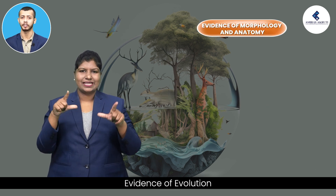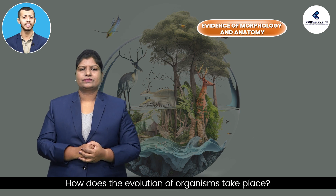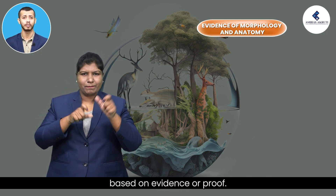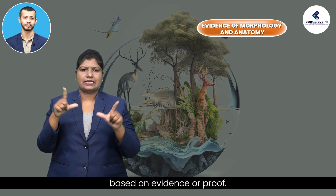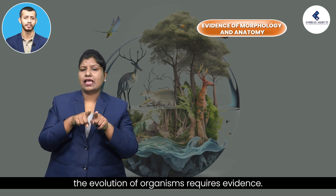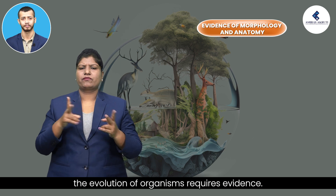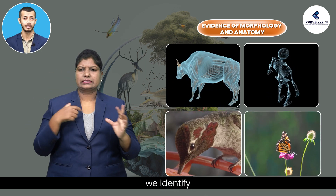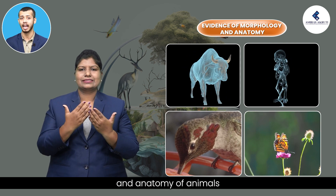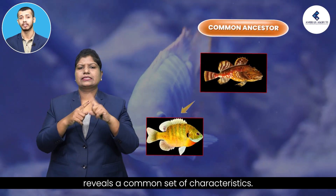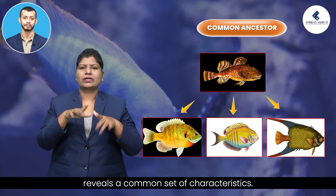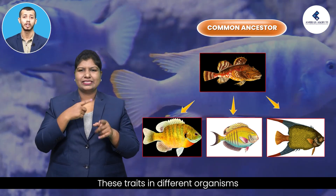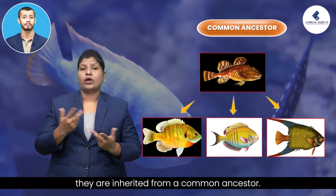Evidence of evolution: how does the evolution of organisms take place? Scientists propose theories based on evidence or proof. In the same way, the evolution of organisms requires evidence. To understand evolutionary relationships, we identify that the comparative study of morphology and anatomy of animals reveals a common set of characteristics. These traits in different organisms would be similar because they are inherited from a common ancestor.